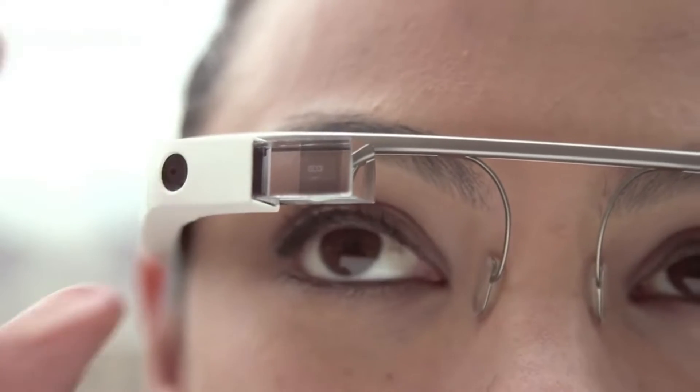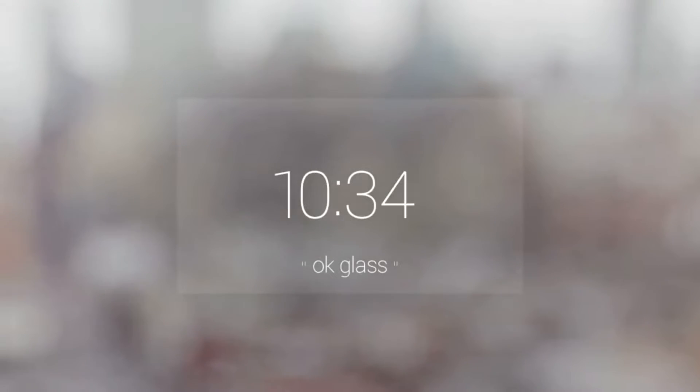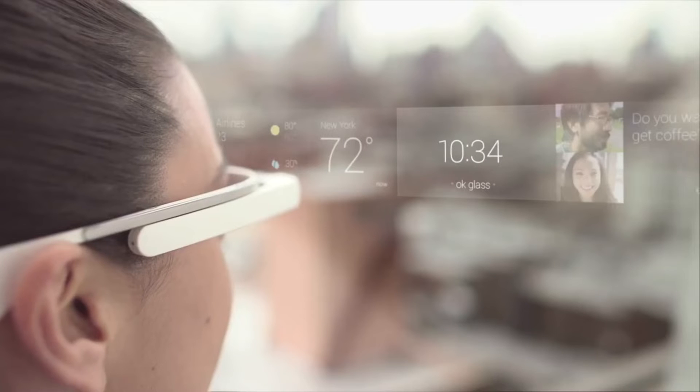In theory, with Google Glass, you are able to view social media feeds, text, Google Maps, as well as navigate with GPS and take photos.